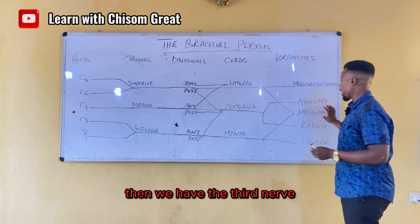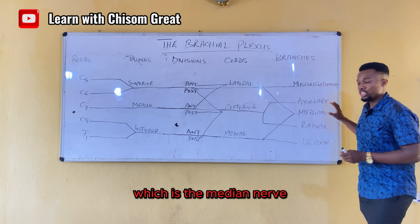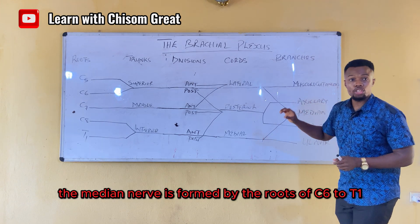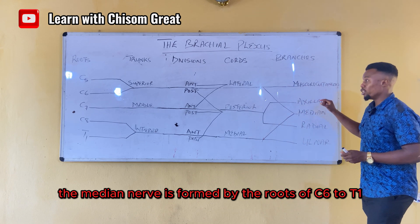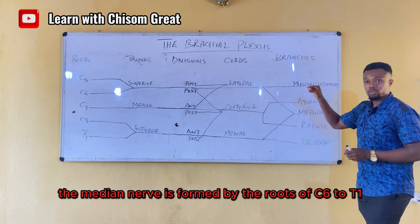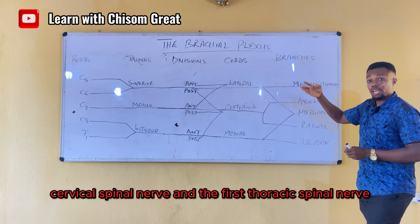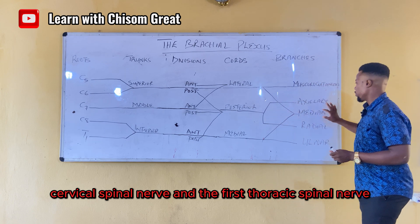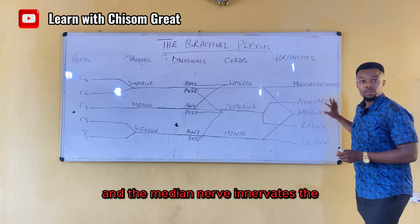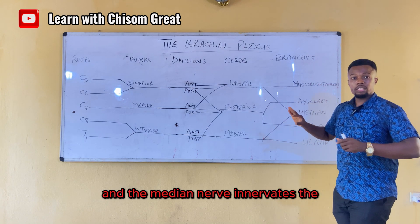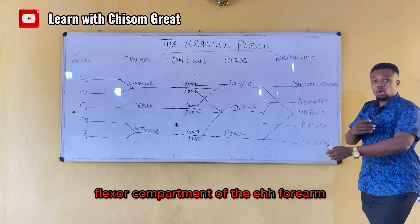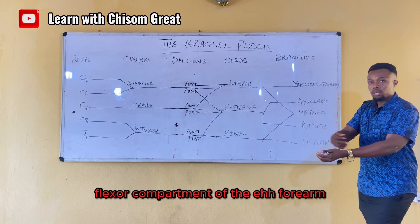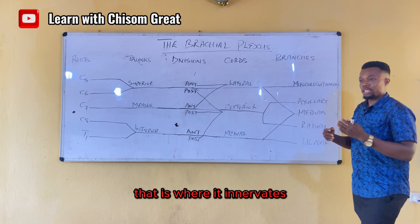The third nerve is the median nerve. The median nerve is formed by the roots of C6 to T1 — the cervical and thoracic spinal nerves. The median nerve innervates the flexor compartment of the forearm.